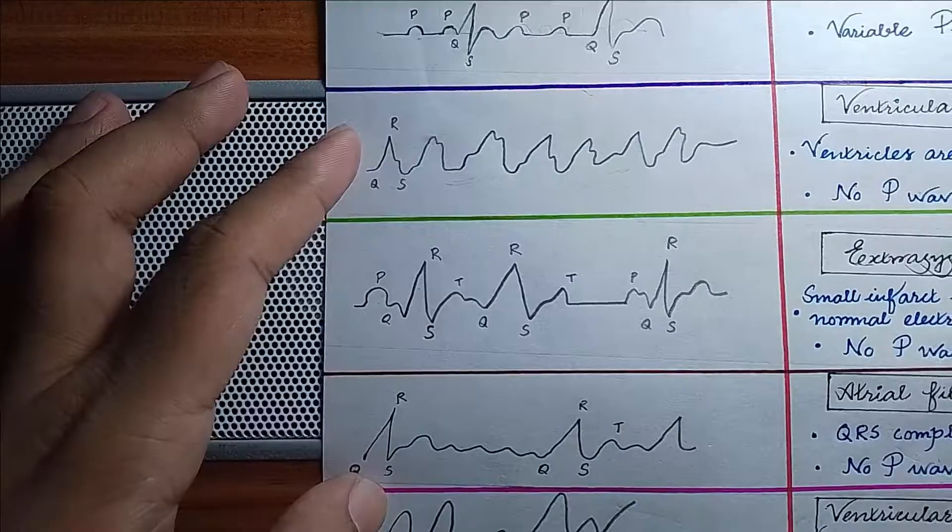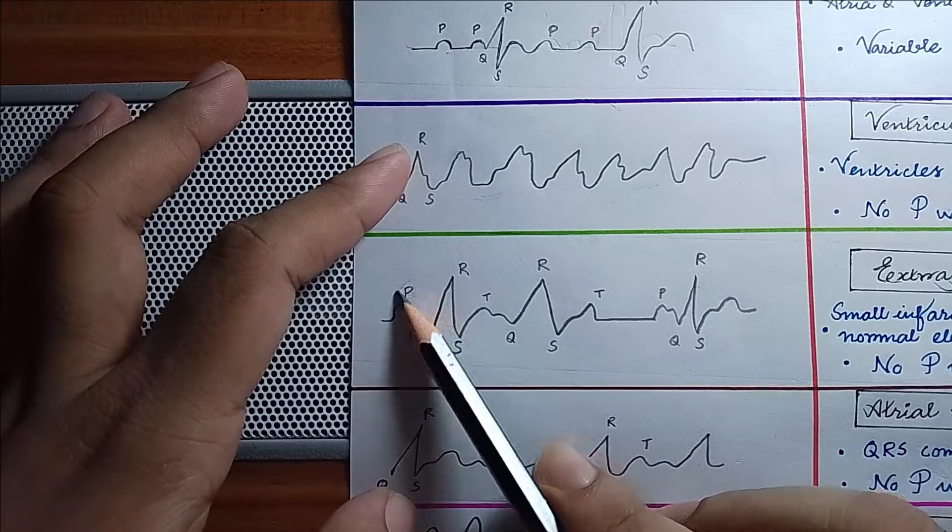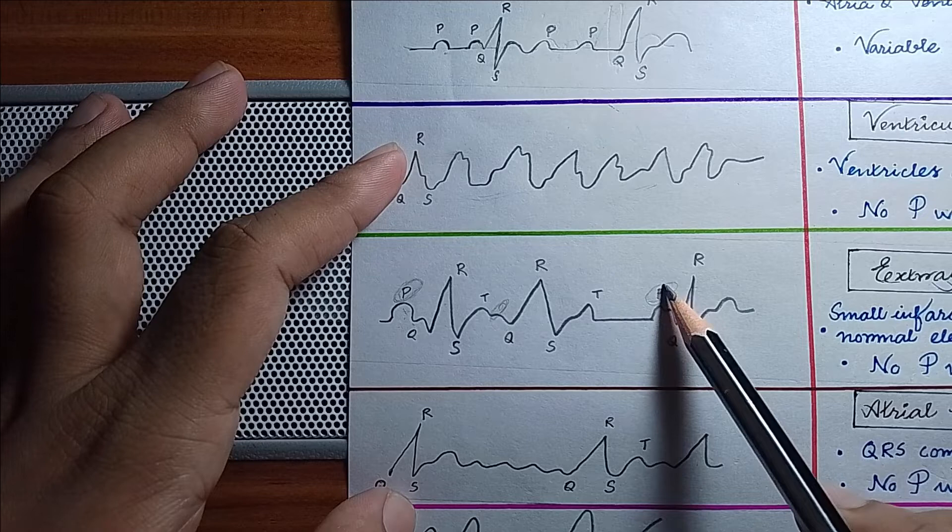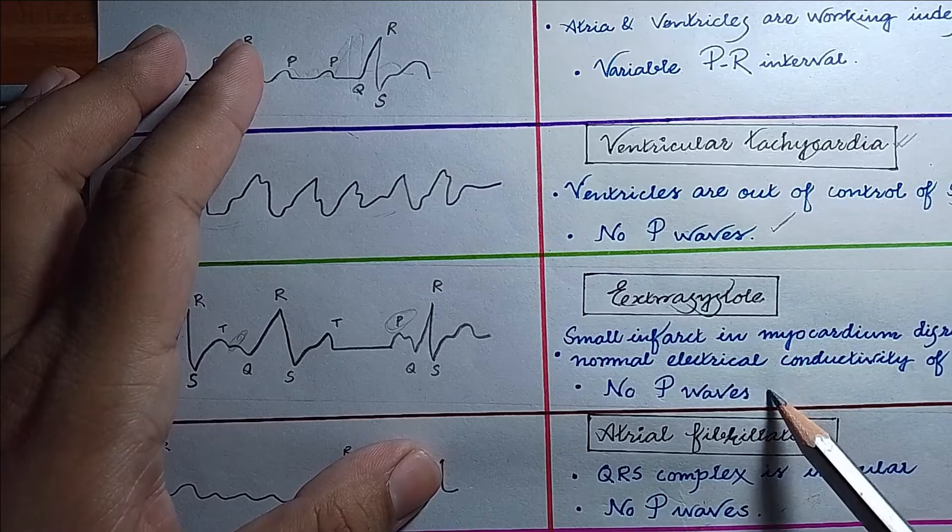...you can see there is a missing P wave - here is one P wave, a P wave is missing, then again you can see a P wave, and all of these are irregular. So this is most likely due to a small infarction in myocardium...